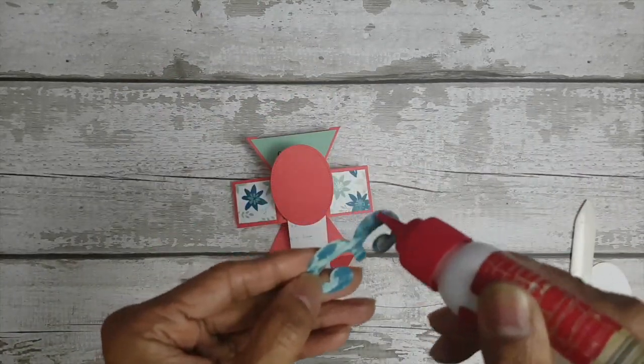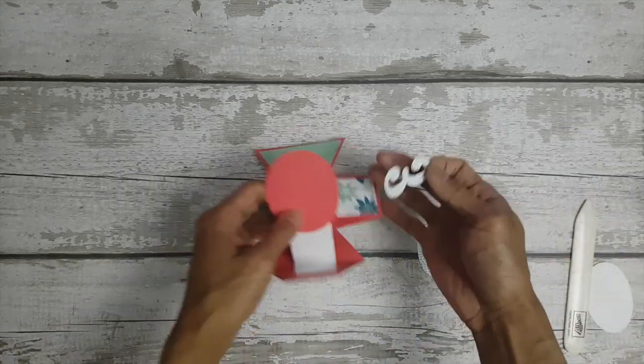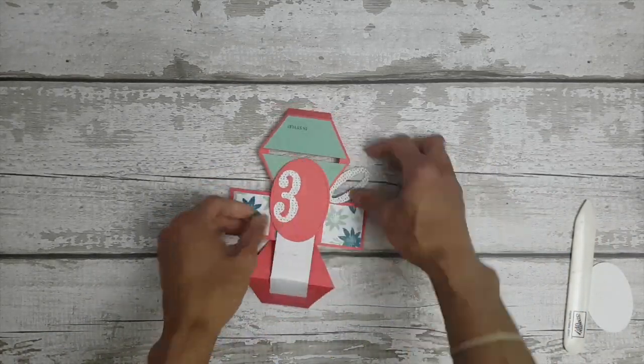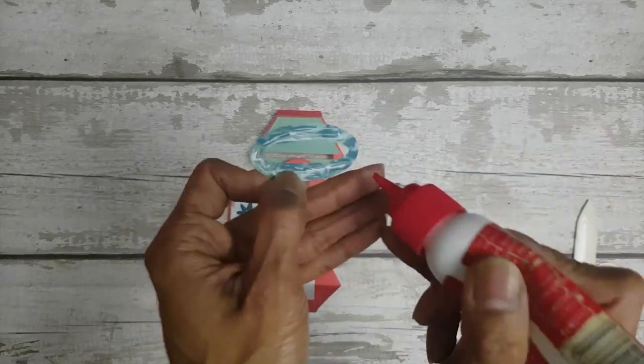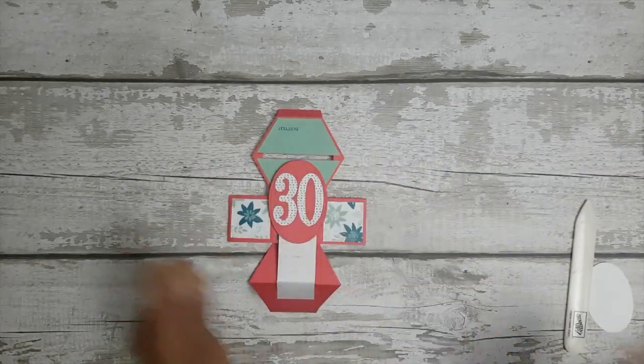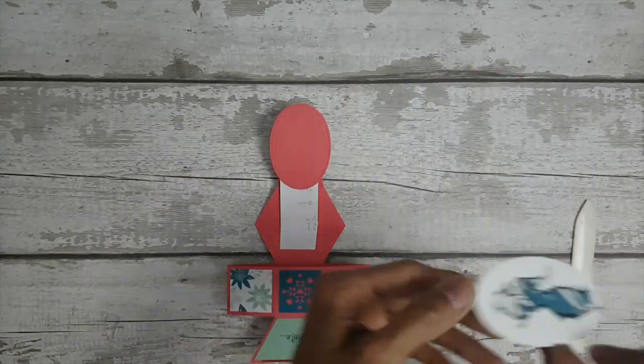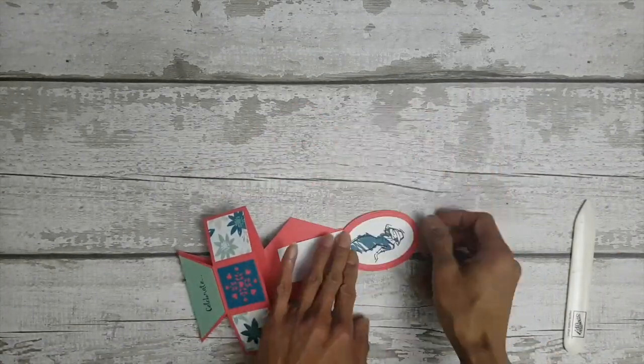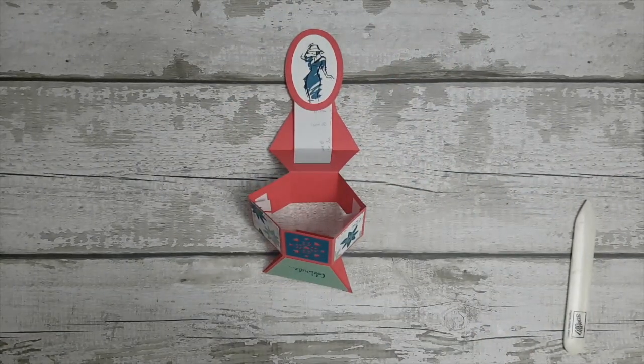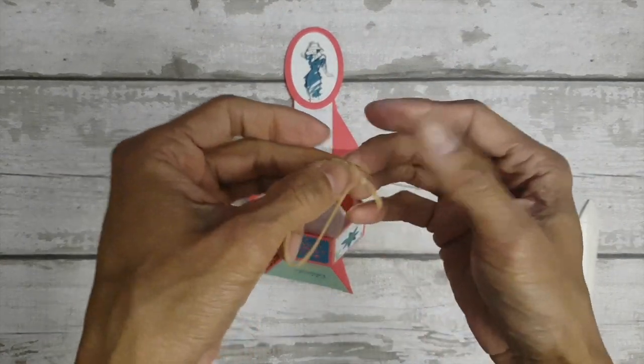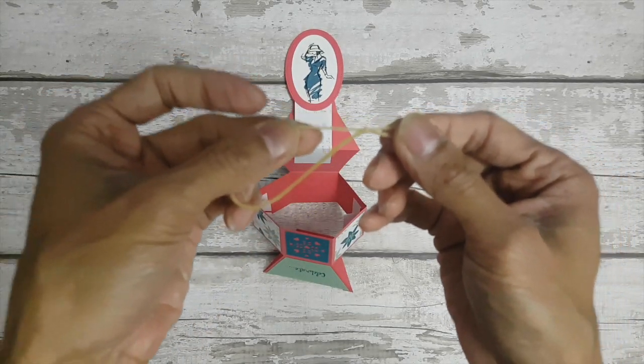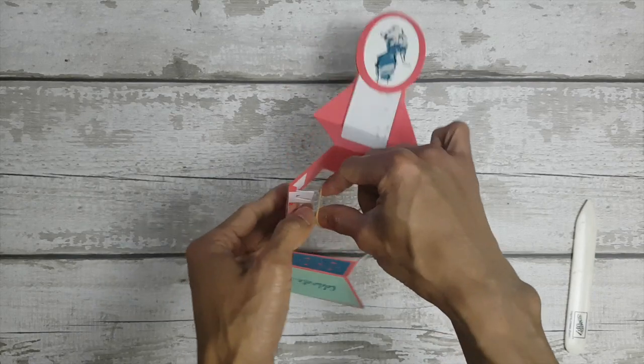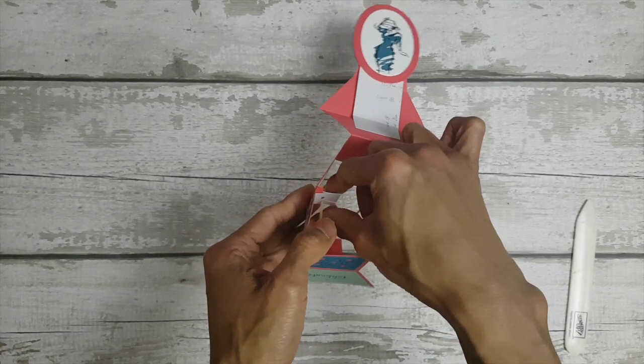For the back of the topper I've used the large numbers framelits dies because I'll be giving this card to my sister who's turning 30 and it fits nicely within that oval shape. And then just tape the front topper making sure that there's a nice border around her. So now we can add the rubber band mechanism. So I've tied the knot and made a one and a half inch circumference so start off with one side.